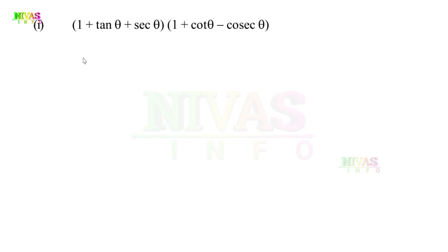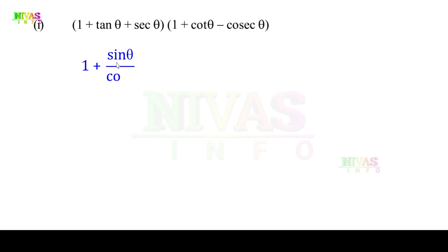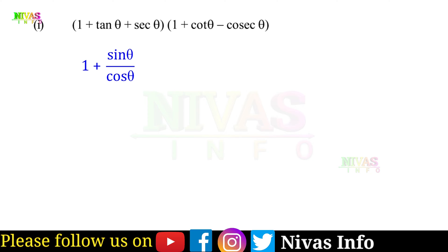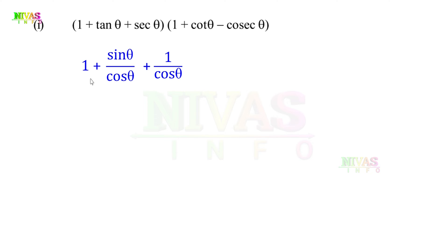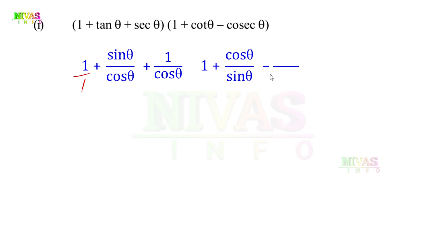First one: (1 + tanθ + secθ) into (1 + cotθ - cosecθ). We will evaluate the first bracket. Here tanθ is sinθ by cosθ, and secθ is 1 by cosθ. So writing the first bracket with cosθ as the common denominator.